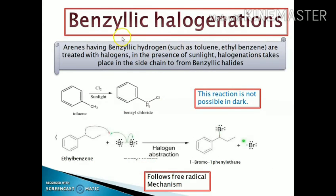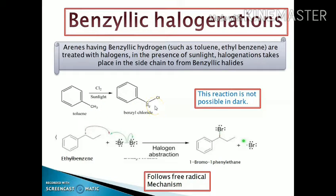The next is benzylic halogenation. In benzylic halogenation, rings having benzylic hydrogen, such as toluene and ethylbenzene, are treated with halogen in the presence of sunlight. Halogenation takes place in the side chain. The main condition is sunlight — this reaction is not possible in the dark, as in darkness the CH3 or C2H5 group acts as an electron-releasing group. When carried out in sunlight, the hydrogen of the side chain is displaced to give benzylic halides. For example, when toluene reacts with chlorine in sunlight, it gives benzyl chloride. Similarly, when bromine reacts with ethylbenzene, 1-bromo-1-phenylethane is formed.